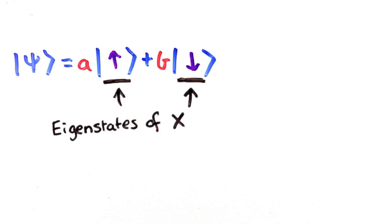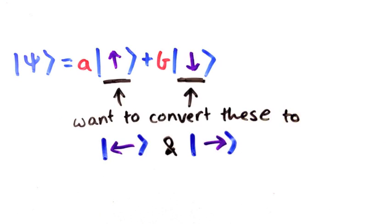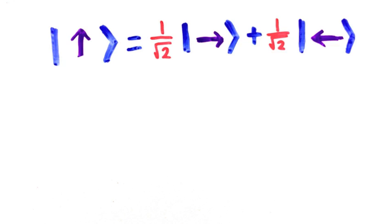First, let's call each of these states the eigenstates of x. My task is really to rewrite these in terms of the eigenstates of y, and there is always a set rule to do this.